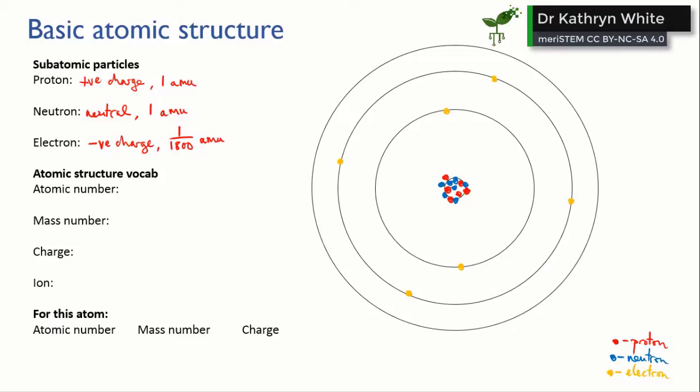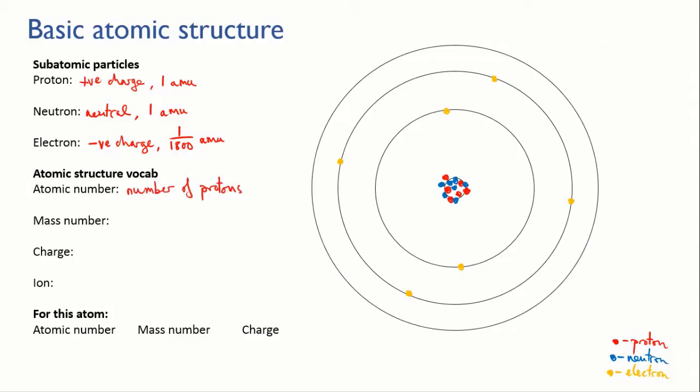Now let's bring in a few useful terms. The atomic number of an atom is simply the number of protons that it has. It also happens to be the way in which atoms are arranged in the periodic table.